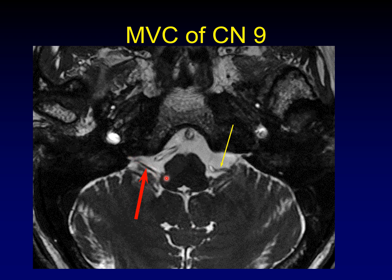Here is the ninth cranial nerve traversing the lateral medullary cistern — a straight shot. It's easy to confuse the ninth and tenth cranial nerves on axial images, but CN IX is more superior to CN X. On the abnormal side, a loop of the posterior inferior cerebellar artery has displaced the ninth cranial nerve so much it's plastered against the flocculus. It's clearly displaced from its normal course, which should be symmetric to the other side. This is microvascular compression of the ninth cranial nerve.